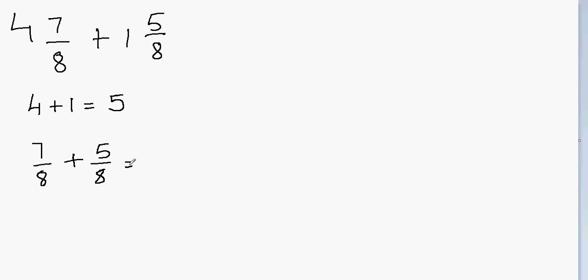Now good thing is I have like denominators so I don't have to worry. I can just add the numerators. So 7 plus 5 that will give me 12 and I still have denominator 8 because you don't add the denominators.